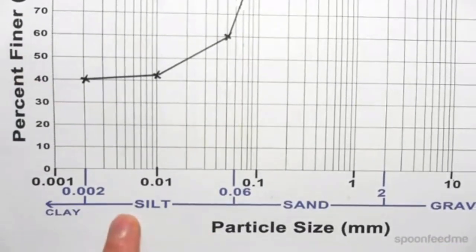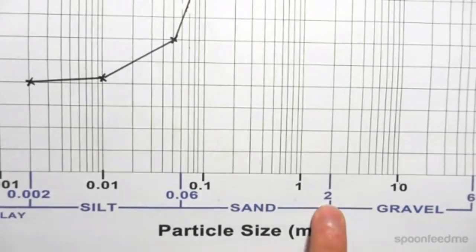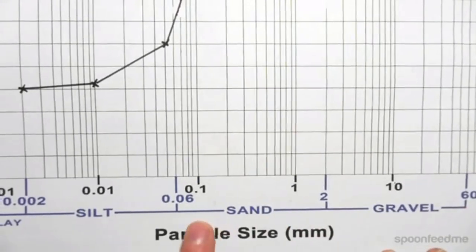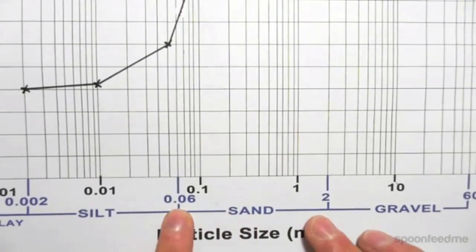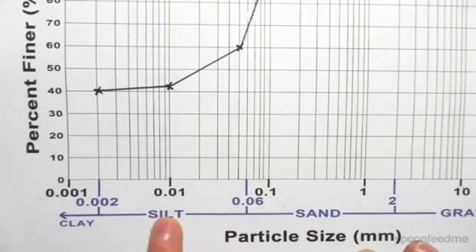Another interesting thing is that we know that from the first video we had ranges of particle sizes. We had gravels, which range from 2 to 60 millimeters. We had sands, which range from 0.06 to 2 millimeters.